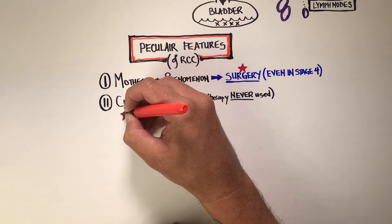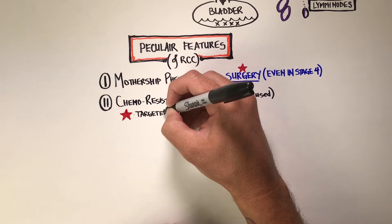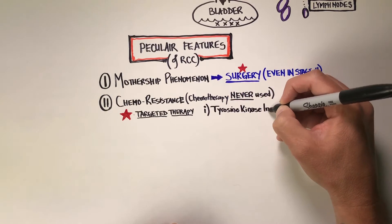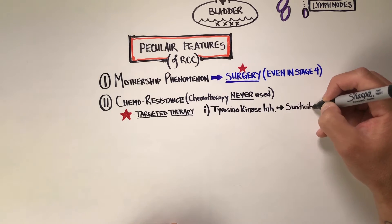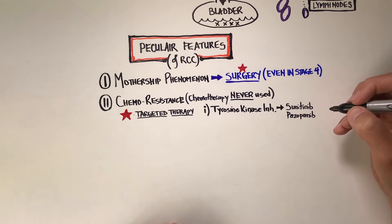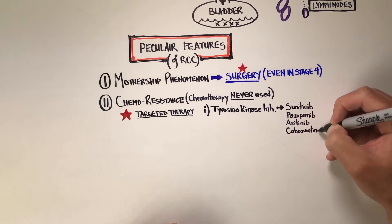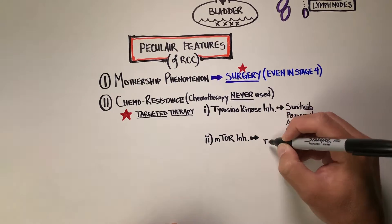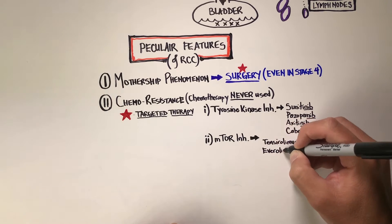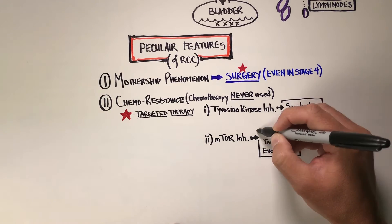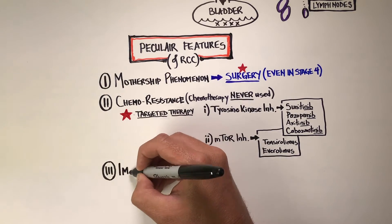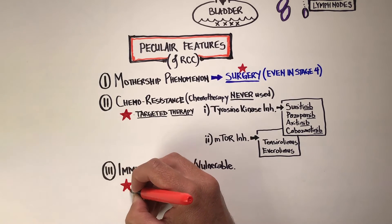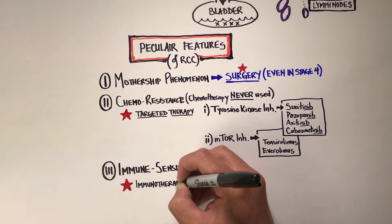Also unique to renal cell carcinomas is that they are extremely chemo-resistant — chemotherapy is never used in kidney cancer. Instead, targeted therapies are used. The main class is tyrosine kinase inhibitors: sunitinib, pazopanib, axitinib, cabozantinib — the '-nib' suffix indicates this class. The other class is mTOR inhibitors, which work on a different internal mechanism to sabotage cancer cell growth. Common mTOR drugs include temsirolimus and everolimus, known as Torisel and Afinitor.